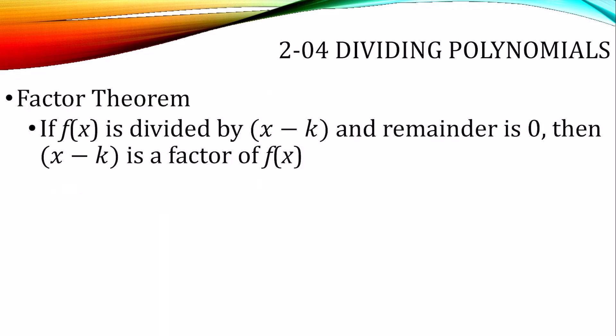The factor theorem says that if you take a function, divide it by x minus k, and the remainder is 0, then x minus k is a factor of f of x — which is essentially the definition of a factor. Something is a factor if the remainder is 0 when you divide.